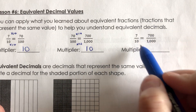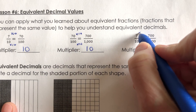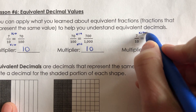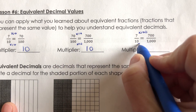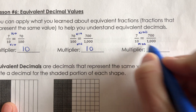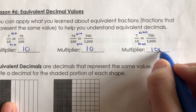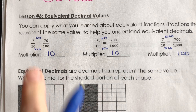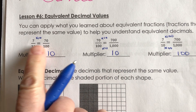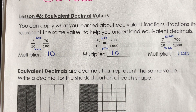And for the last one, I have 7 tenths equals 700 over 1,000. Here, 7 times 100 is 700, and 10 times 100 is 1,000. So the multiplier here is 100. So hopefully we are in agreement that these are equivalent, those are equivalent, those are equivalent.